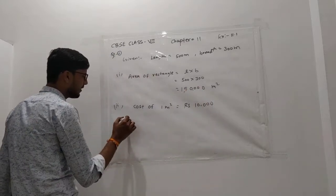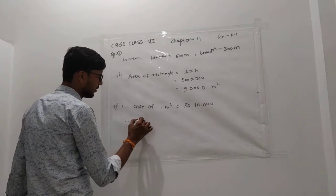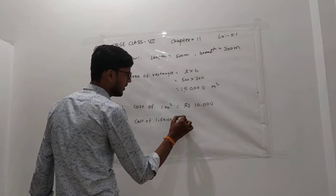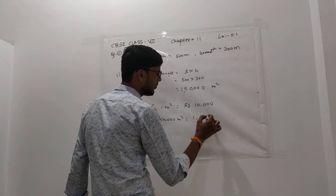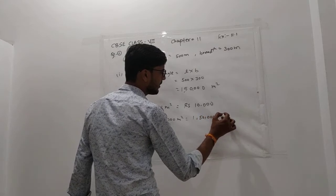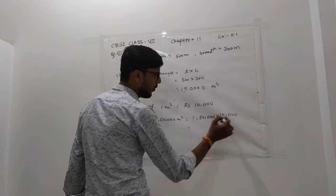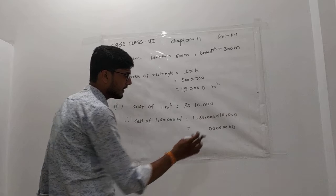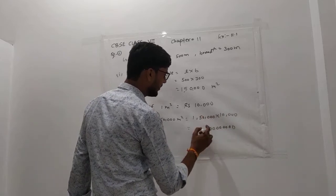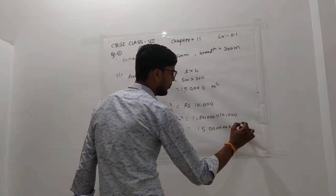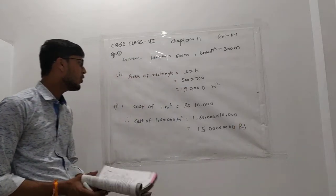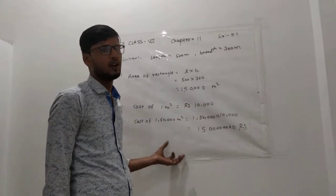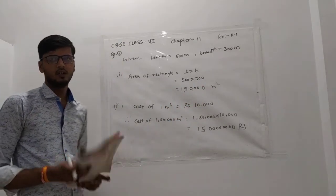Total cost of 1,50,000 meter square: multiply 1,50,000 by 10,000. So the total cost comes out to 1,50,00,00,000 rupees. Is that clear? This is our question number one.